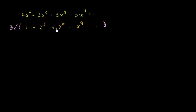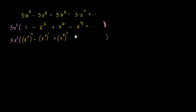This looks like we are taking powers of x to the third. So we can write this as 3x² times: x to the third to the zeroth power, minus x to the third to the first power, plus x to the third to the second power, minus x to the third to the third power, and so on. Now we have to worry about the switching of signs. This is positive, which is the same as negative one to the zero power; this is negative, which is negative one to the first power.